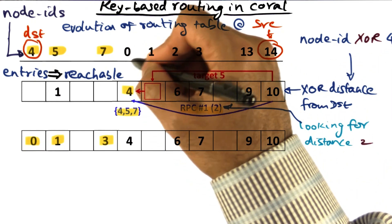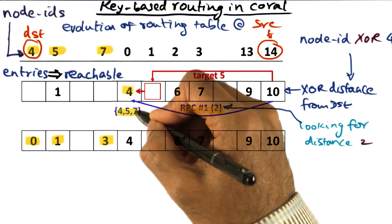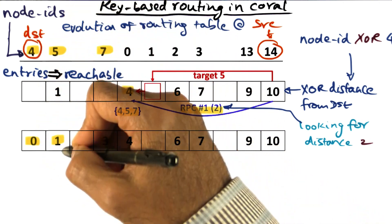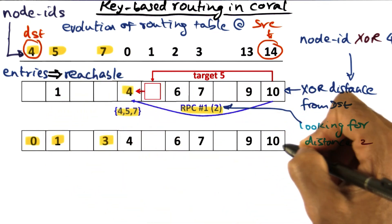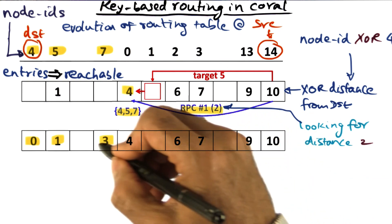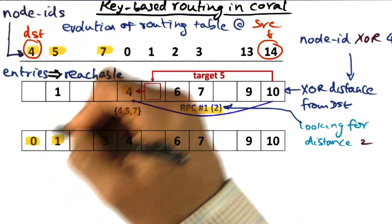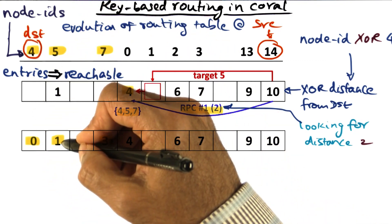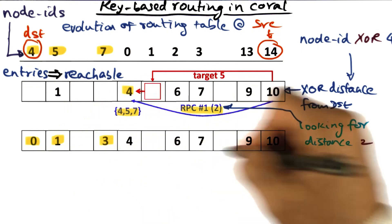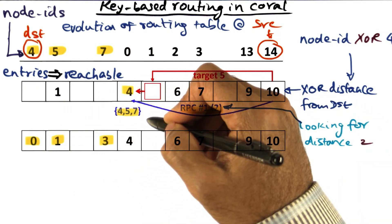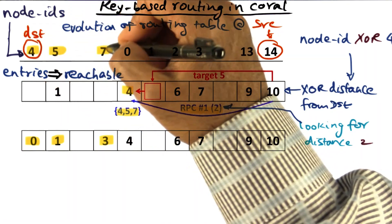When I get the response from this node, what I'm getting back is information on how to reach nodes number four, five, and seven. So I'm now going to populate my routing table to evolve it to this new state, where in addition to what I started with originally, I have new information about how to reach node number four and node number seven. I evolved my table by adding two more reachable entries, namely nodes four and seven.